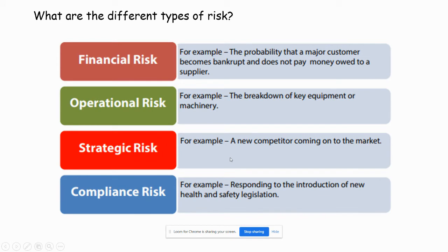The last one is compliance risk — that is responding to the introduction of new health and safety legislation. Whether it's giving people appropriate training, safety equipment, or protective equipment. There might be options like moving things abroad where laws are different, but even following everything to the letter is a risk because it might cost you a lot of money and cut into your profit. So all compliance with laws and legislation involves compliance risk.